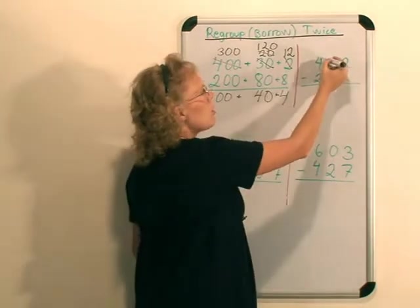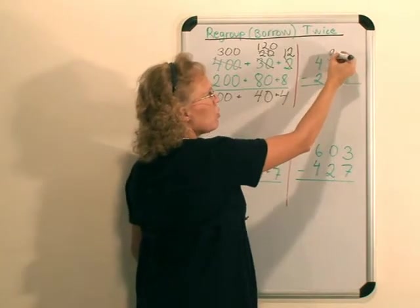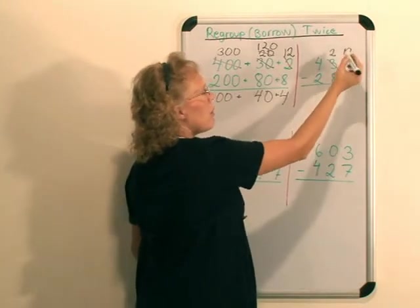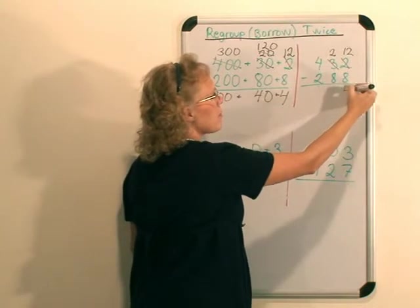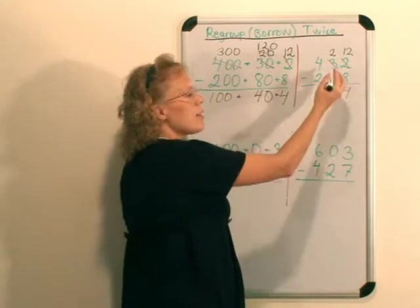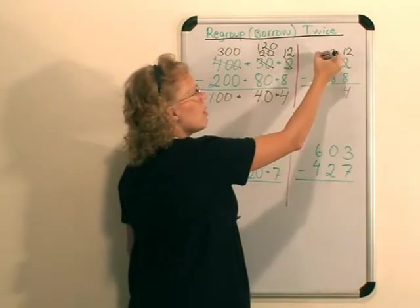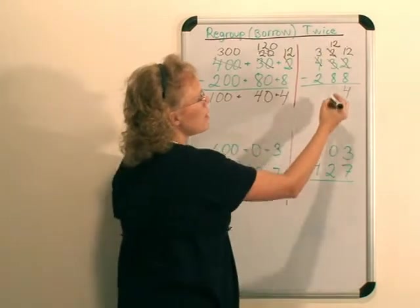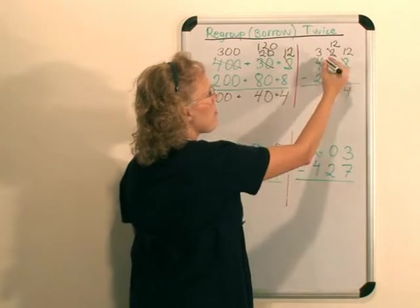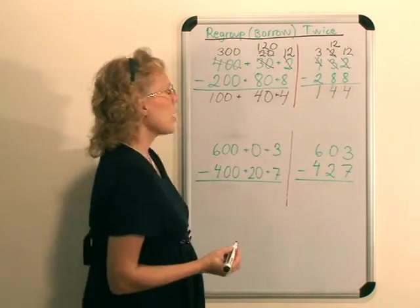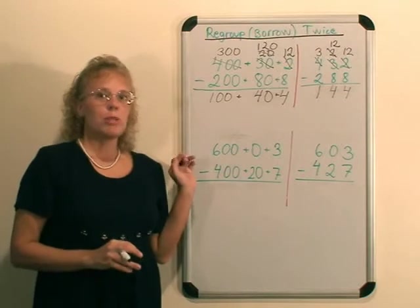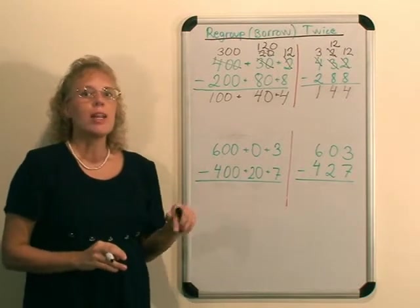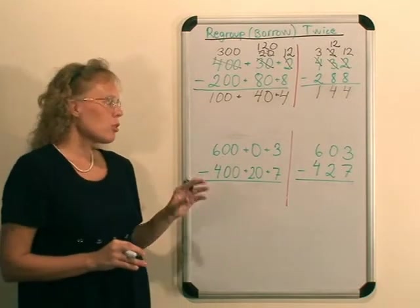And this is how it looks like here. 2 minus 8 you cannot do, so you take a 10, leaving 2 tens, and here 12 ones, and then subtract. And then in the tens you cannot do it, so you have to take a 100 and it becomes 12 tens, and now subtract.